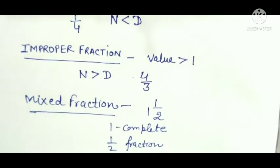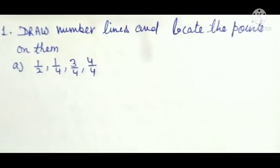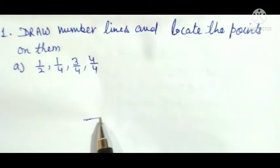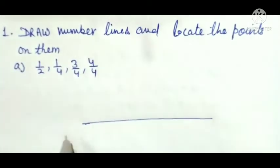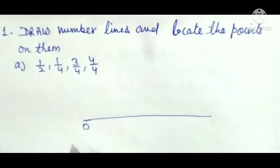Now let us start Exercise 7.2, Question number 1: Draw number lines and locate the points on them — 1/2, 1/4, 3/4, and 4/4. A number line has zero in the middle, positive numbers to the right (1, 2, 3, 4, 5, 6...) and negative numbers to the left.